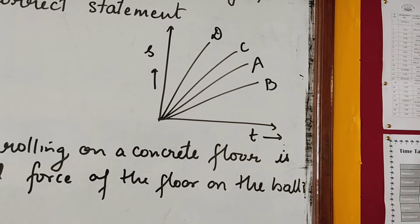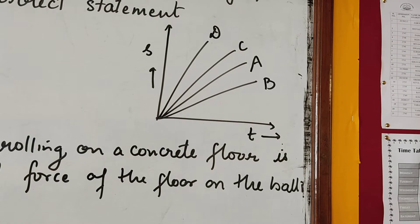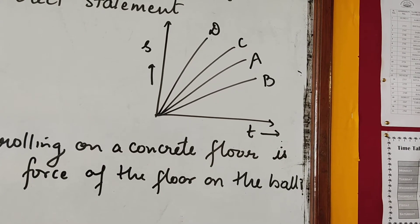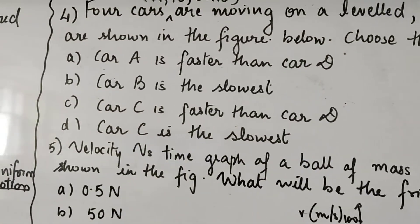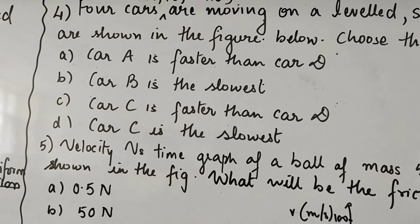We know that car B has the least slope. It means slope is least, but slope of ST graph gives us what? Speed. So slope of ST graph for car B is minimum. It means that its speed is minimum. So car B is the slowest. Car B is the slowest. So B is the correct option.